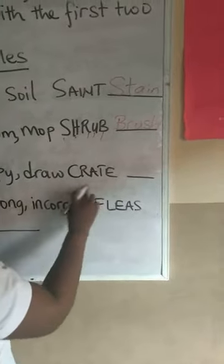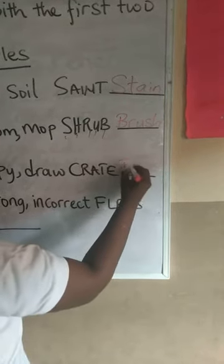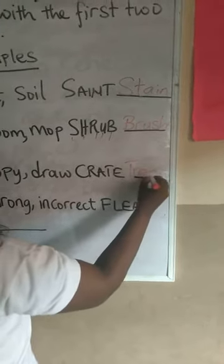From the letters in CRATE, we get the word T-R-A-C-E.